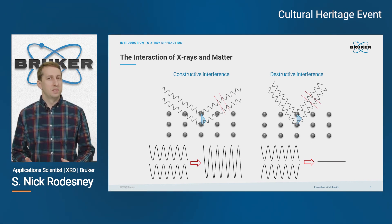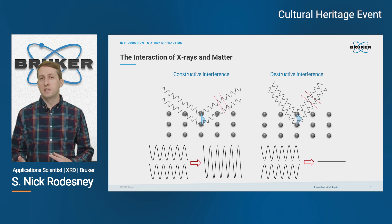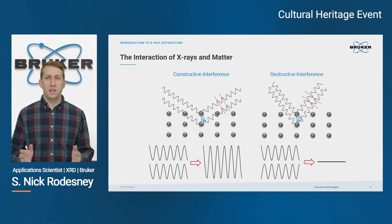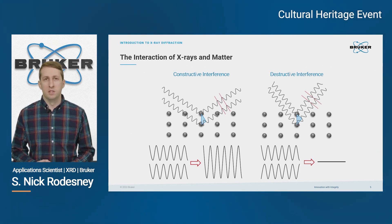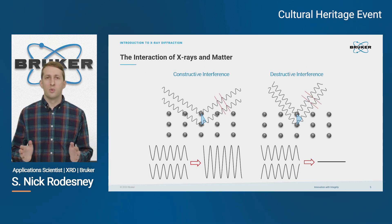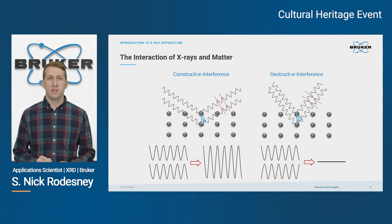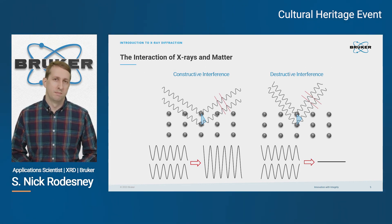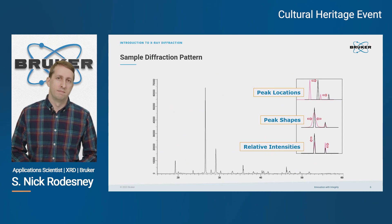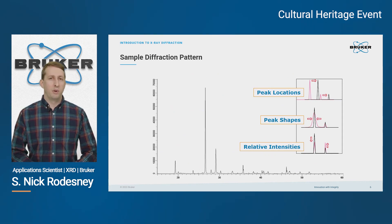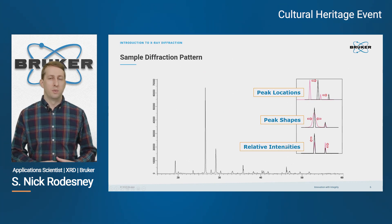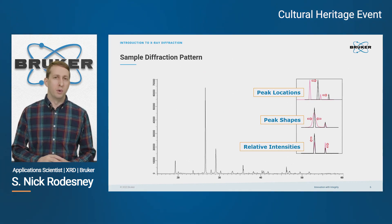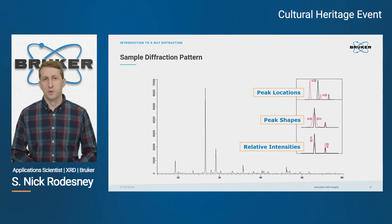Since a crystal structure has many d spacings — a whole set of d spacings — it's important in any given x-ray experiment to measure a wide range of angles to try to fulfill as many Bragg conditions as possible. So when we see a diffraction pattern like we see here, each peak represents a particular angle where the Bragg condition is fulfilled for a d spacing in our crystal structure.